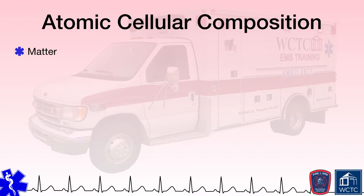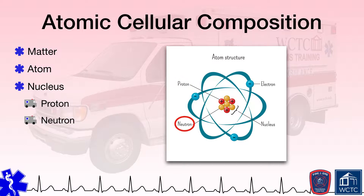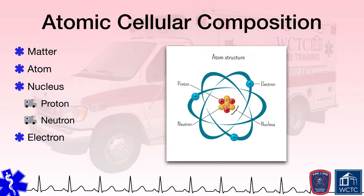Matter is anything that has mass and takes up space. While the building blocks of matter are atoms, atoms themselves are made up of even smaller particles. At the center of an atom is its nucleus, which is commonly comprised of positively charged protons and neutrons which have no charge. Orbiting or existing around this proton-neutron nucleus is a negatively charged electron. The mass of an atom comes predominantly from its neutrons and protons. The neutrons are slightly heavier than the protons, both of which are significantly heavier and larger than the electrons.